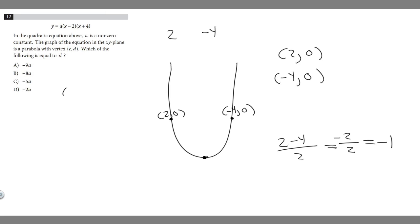So it's going to be at (-1, some value). That's (c,d). So c is -1, and we're trying to find d, this value right here.